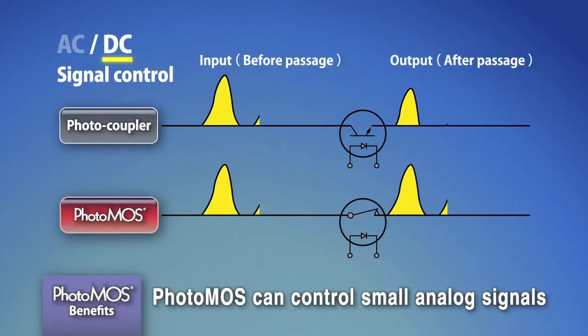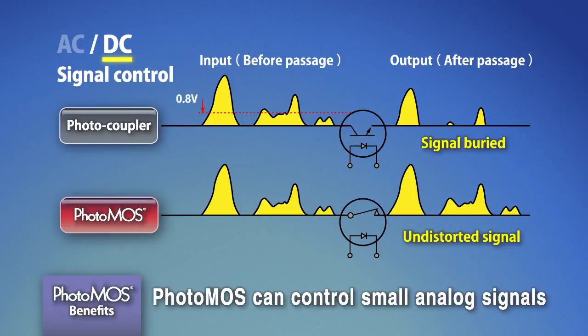The situation is similar for photocouplers controlling DC signals. With PhotoMOS, controlled by MOSFET, the notion of on voltage is irrelevant. Even with a small voltage signal, even if it is an analog signal, MOSFET can control signals without distortion.